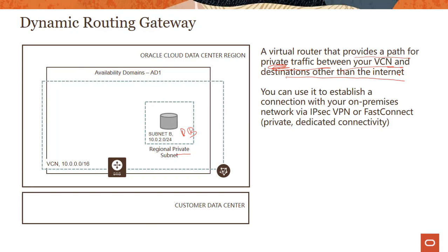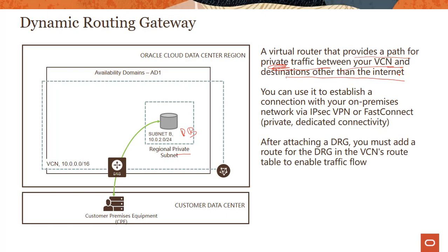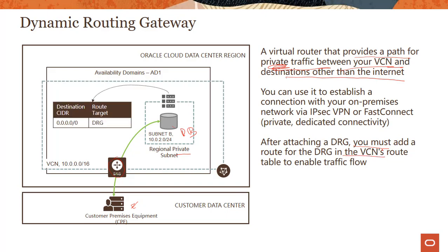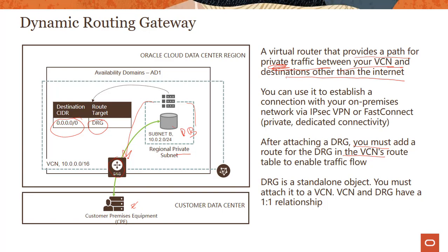You can use the dynamic routing gateway to establish a connection, and there are two different mechanisms for doing that: one is through site-to-site VPN, and the second is a dedicated private connectivity called FastConnect — these will be covered in subsequent modules on connectivity. Through the DRG, your database can communicate to your on-prem environments. You create the DRG, attach it to the VCN, and add a route rule so all packets destined for any IP address go through the DRG. DRG is a standalone object — you must attach it to a VCN. A single VCN can only have one DRG, and one DRG can be attached to a single VCN at a time.